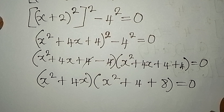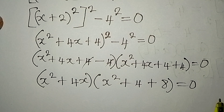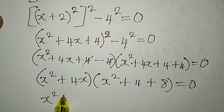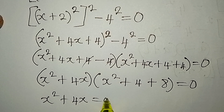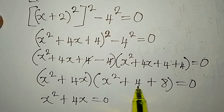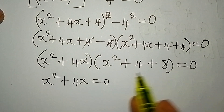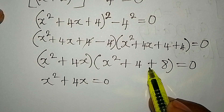We now have two factors multiplied together equal to zero, so either factor can be zero. Therefore x squared plus 4x equals zero, or x squared plus 4x plus 8 equals zero. We'll deal with the first one first.